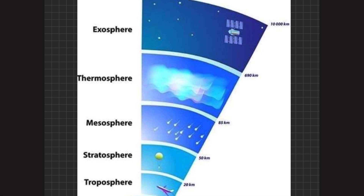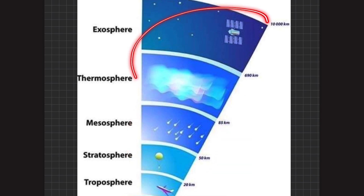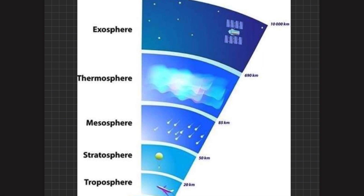From the troposphere to the mesosphere, all these layers constitute the homosphere, whereas the thermosphere and exosphere constitute the heterosphere. The composition of atmospheric constituents remains uniform in the homosphere layers, whereas there is variation in composition in the thermosphere and exosphere, which is why they are placed in the heterosphere.